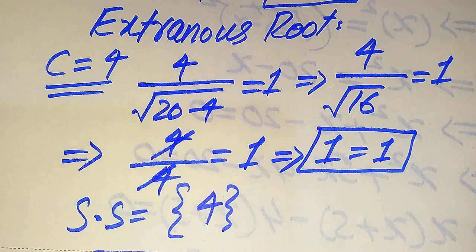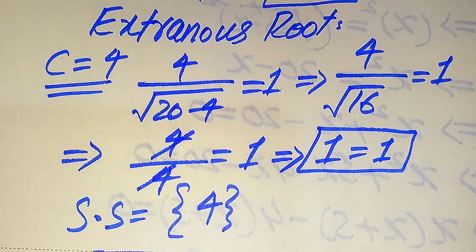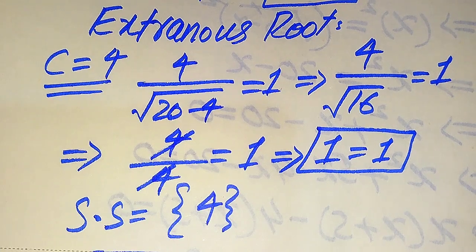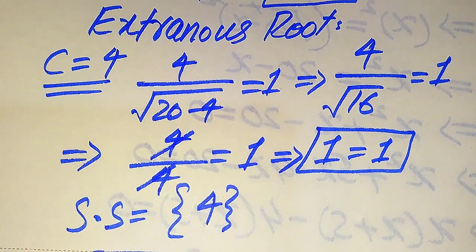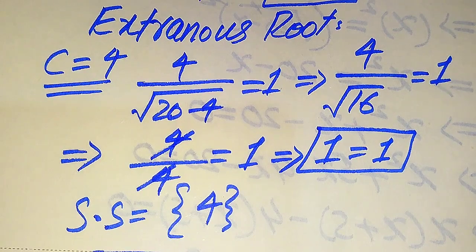The root which satisfies the given equation is called the solution, and the root which does not satisfy the given equation is called the extraneous root. Here, 4 is the solution and minus 5 is the extraneous root. This is the final answer. Thank you so much for watching this video — please subscribe to my channel for more exciting videos.